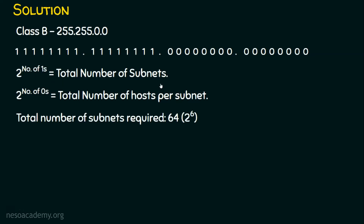In this question, the total number of subnets required is 64. They want 64 networks. How do we represent 64? It's 2 to the power of 6. So correlating with our formula, we are going to reserve 6 ones.